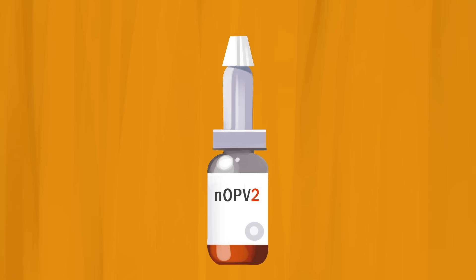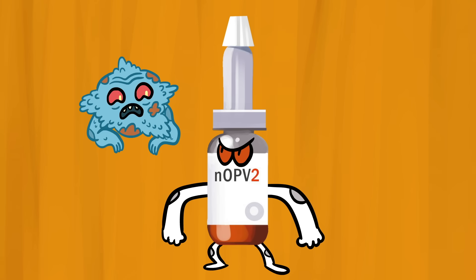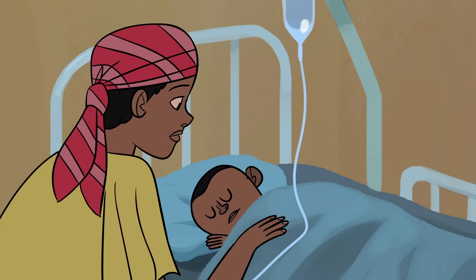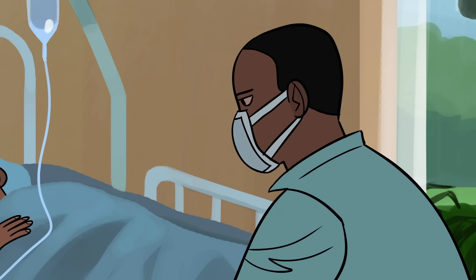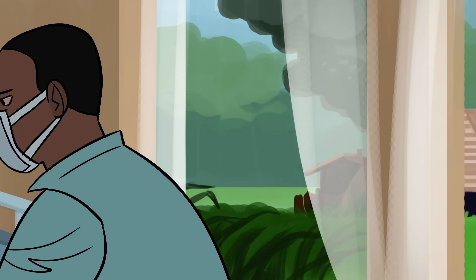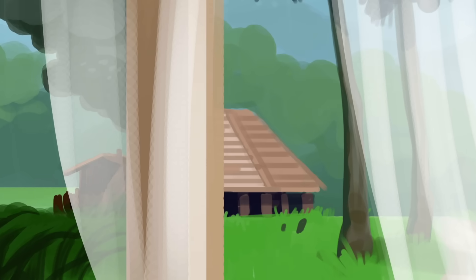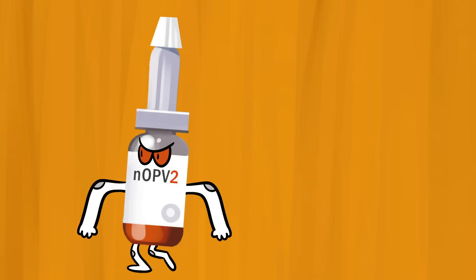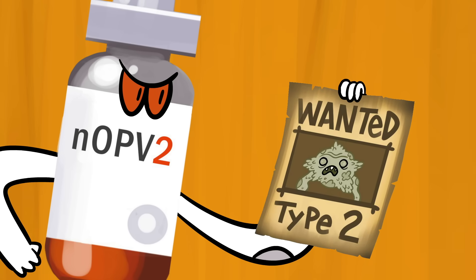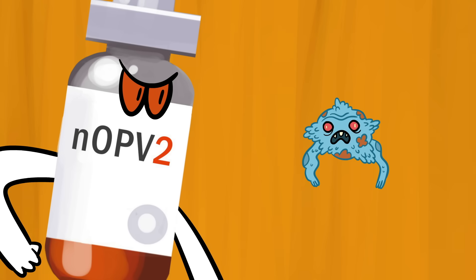Vaccine researchers also developed OPVs targeting vaccine-derived polio. Currently, most polio cases are caused by vaccine-derived poliovirus type 2 outbreaks in Africa and the Middle East. So researchers created a new vaccine specifically to tackle this strain with minimal risk of mutating.